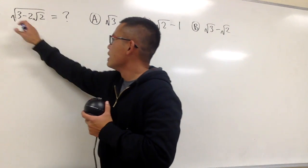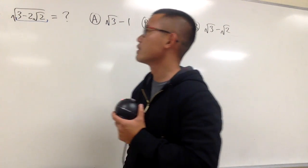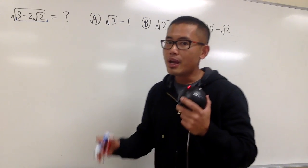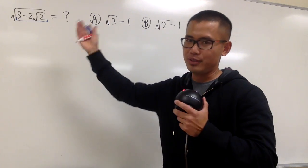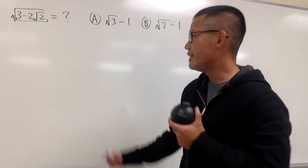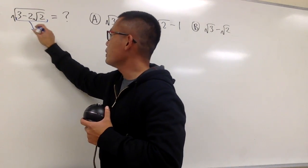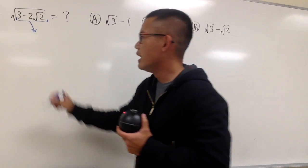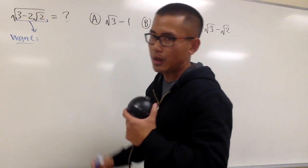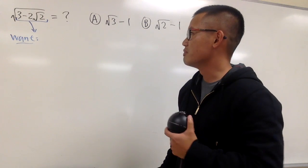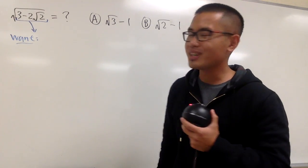And with that being said, if you look at it inside, this is 3 minus 2 square root of 2. Maybe that's actually, or secretly, a perfect square. We just don't know. And now let's take a look. Suppose this is, in fact, a perfect square.